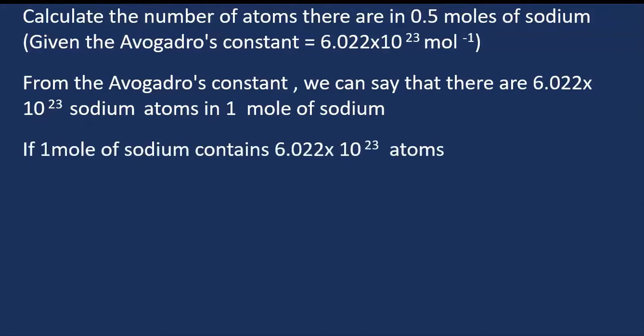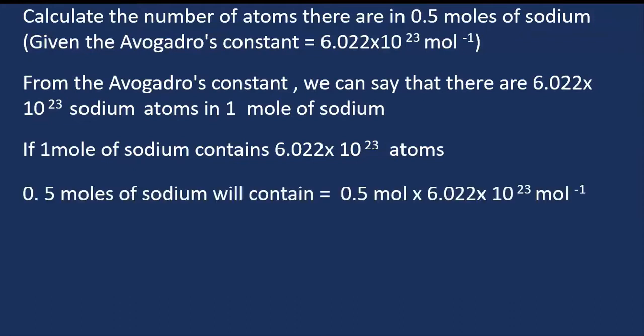So if one mole of sodium contains 6.022 times 10 to the power 23 atoms, to get the number of atoms in 0.5 moles of sodium, multiply the number of moles with the Avogadro's constant, which is 6.022 times 10 to the power 23. And this gives us 3.011 times 10 to the power 23 atoms of sodium.